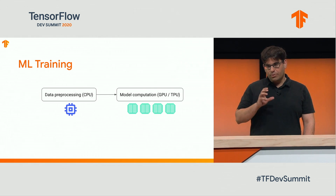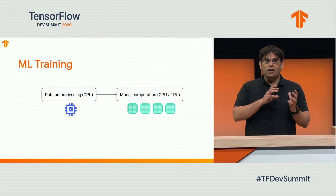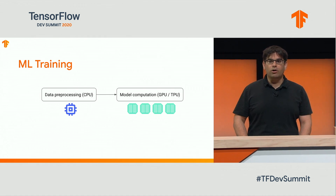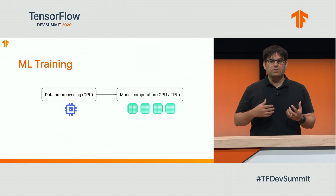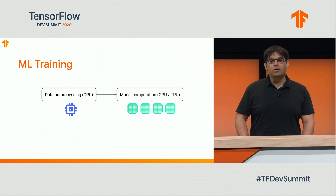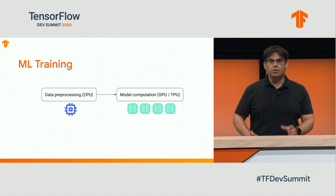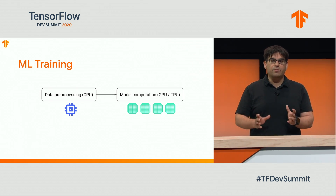Typically, your ML training step will have two phases. The first is data preprocessing, where you look at the input files and do all kinds of transformations to make them ready for the next phase, which is model computation. While you're doing data preprocessing on the CPU, you might be doing things such as cropping images or sampling videos. So if your training speed is slow, you could have a bottleneck in either one of these two phases. I'm here to talk about the first kind of bottleneck, which is data preprocessing.